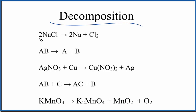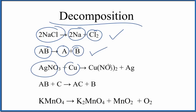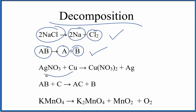In the first one, I've actually balanced this equation, but when you're looking at type of reaction, you really ignore the coefficients. So we have NaCl breaking apart into Na and Cl2 — one thing breaking into two, that's a decomposition reaction. Here we have the general form for decomposition: AB breaks apart into A plus B. Here we have two things going to two things, so that's not decomposition. The copper has pushed the silver out — that's a single displacement reaction.